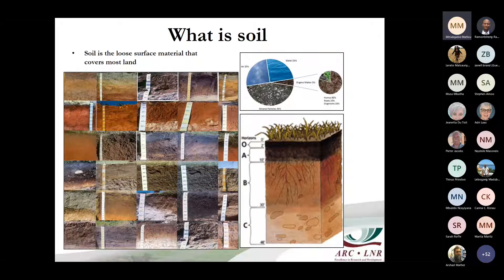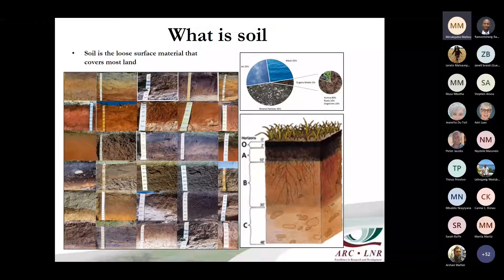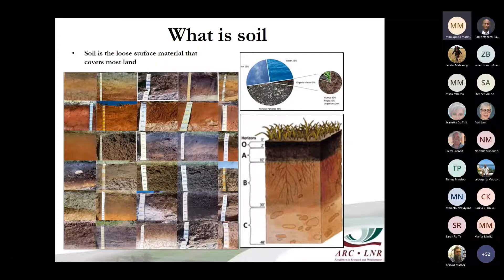Soil is a loose surface material that covers most lands. It is a natural material from weathering of rocks and decomposition of organic matter. It's comprised of about 45% mineral particles, 25% air, 25% water, and 5% organic matter.